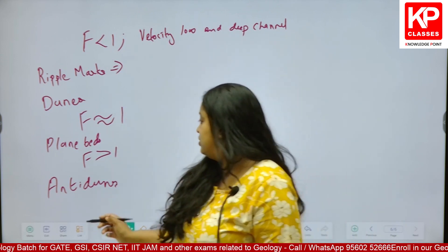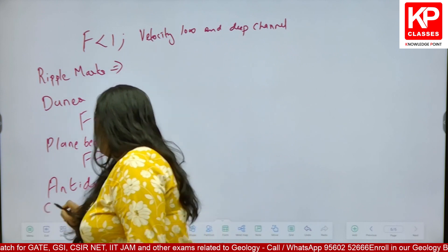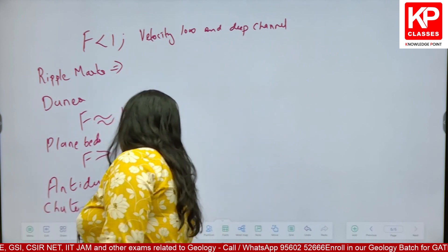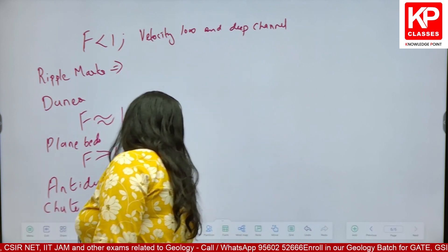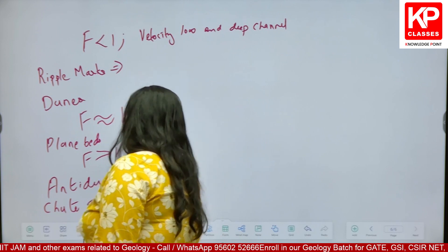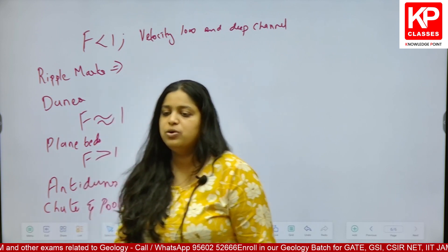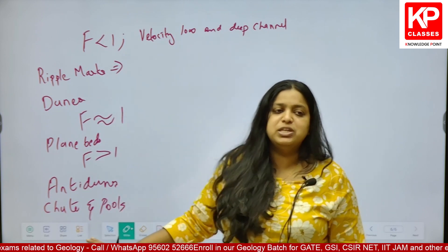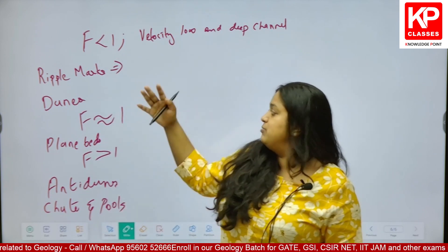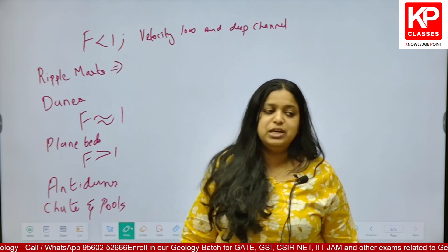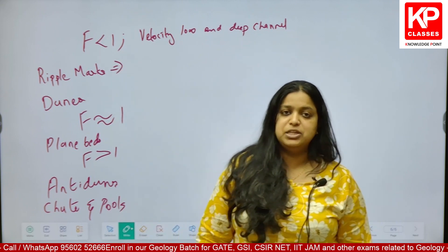If I increase the velocity even further, the flow situation will produce chutes and pools. These are the different bed forms which we can relate with the flow velocity and depth condition.